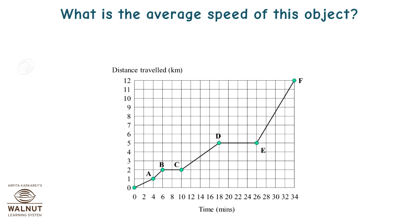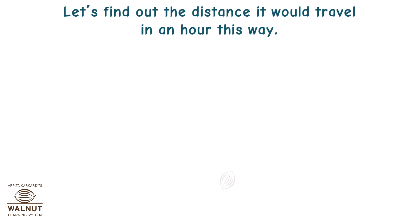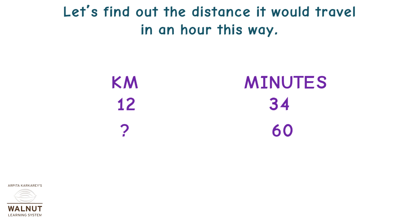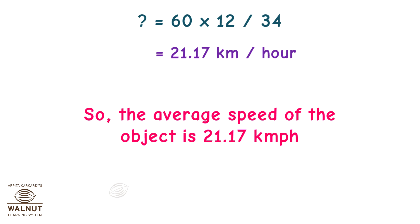What is the average speed of this object? The object travels a total distance of 12 kilometers in 34 minutes. Let's find the distance it would travel in an hour. Therefore, the average speed of the object is 60 multiplied by 12 upon 34, which equals 21.17 kilometers per hour. So the average speed of the object is 21.17 kilometers per hour.